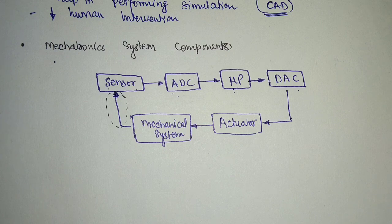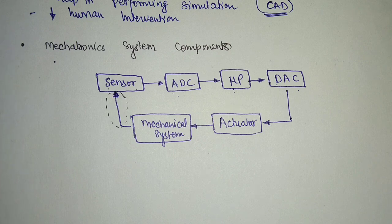That covers the basics of a mechatronics system. In the next video, we are going to discuss actuators and sensors first, and then we will move to the electronics part.